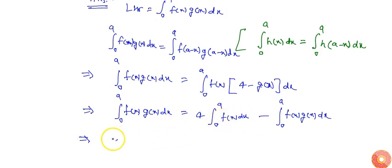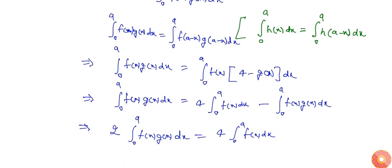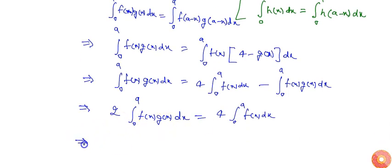So I'll get 2 times integral from 0 to a of f(x)g(x)dx equals 4 times integral from 0 to a of f(x)dx, or I can say integral from 0 to a of f(x)g(x)dx equals 2 times integral from 0 to a of f(x)dx.